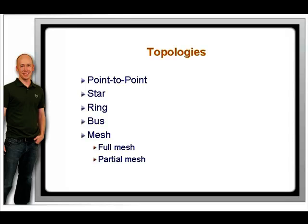A full mesh is a topology with multiple point-to-point connections that connect each location to the others. The advantage is that you can send data directly from any location to any other location instead of having to send it through a central point, and there are more options for sending if one of the connections fails. The disadvantages are that it is expensive and complex to implement. You can compromise and build a partial mesh, which is when only some of the locations are connected to the other locations.